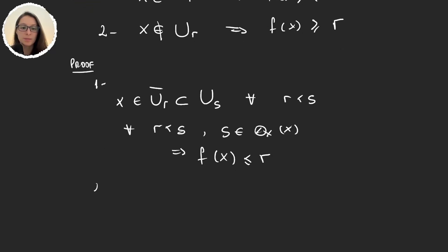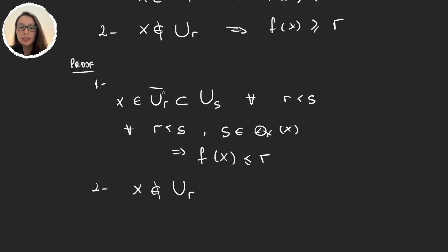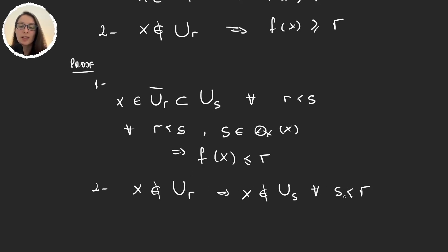Now let's prove the second fact. If x is not an element in U_r, then because all smaller sets U_s are subsets of U_r, x will not be an element in U_s for any s smaller than r. And so the infimum cannot be smaller than r, meaning the infimum has to be greater than or equal to r. So that was very simple — just a few facts about this function f.